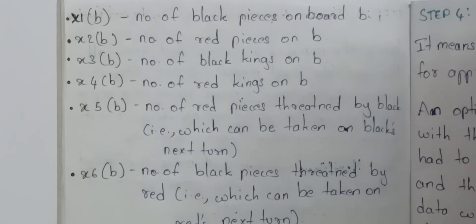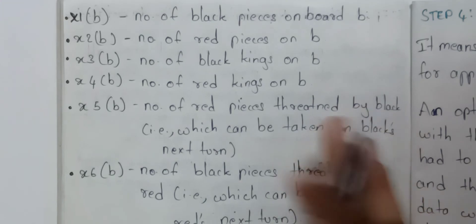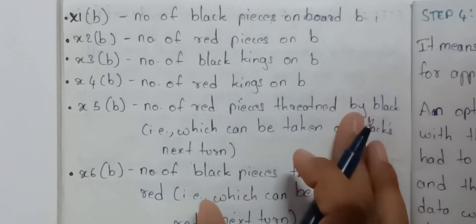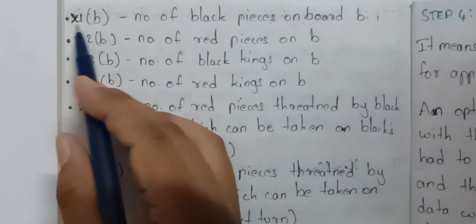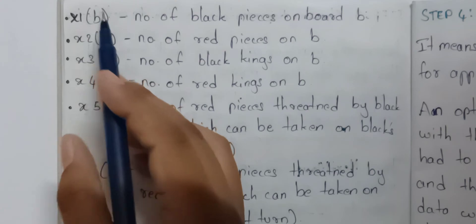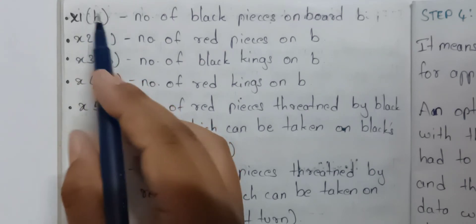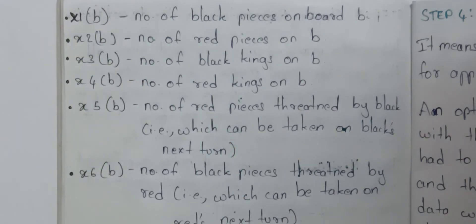What are the features? I will show you a representation form. X1 of b — here b is a set of board states, as discussed in the previous video.